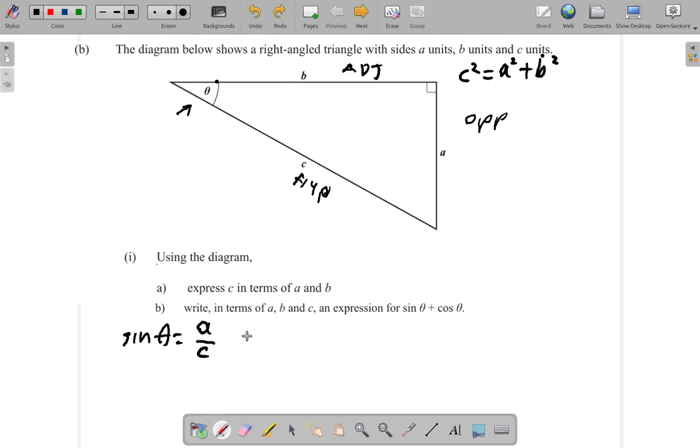We see that cos theta is adjacent, which is B, over hypotenuse, which is C.